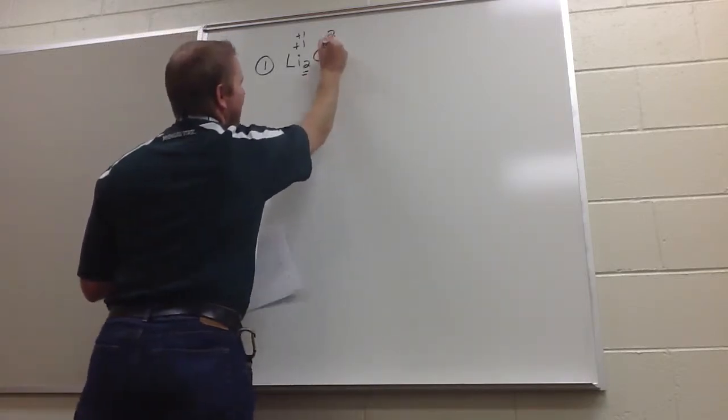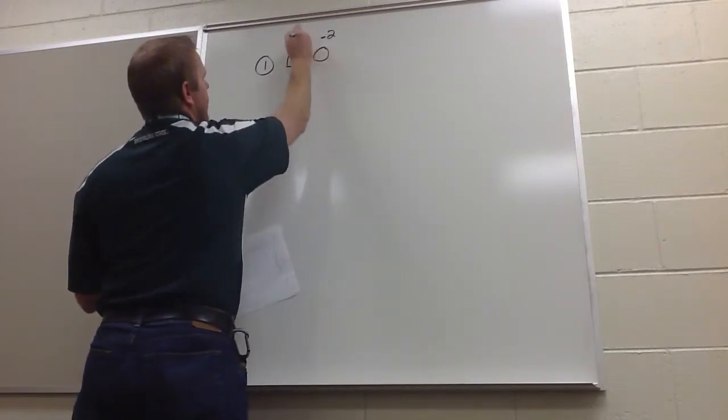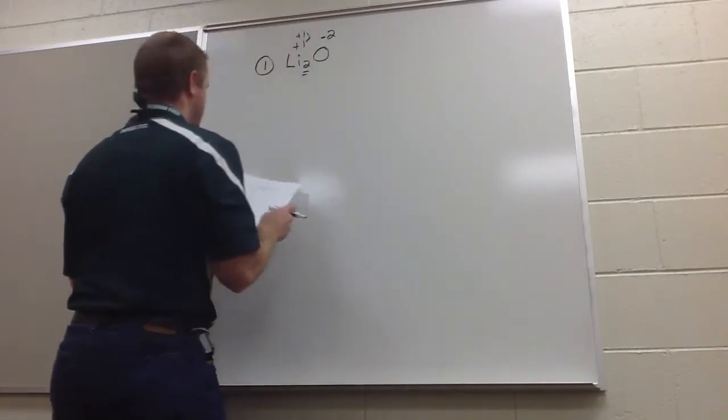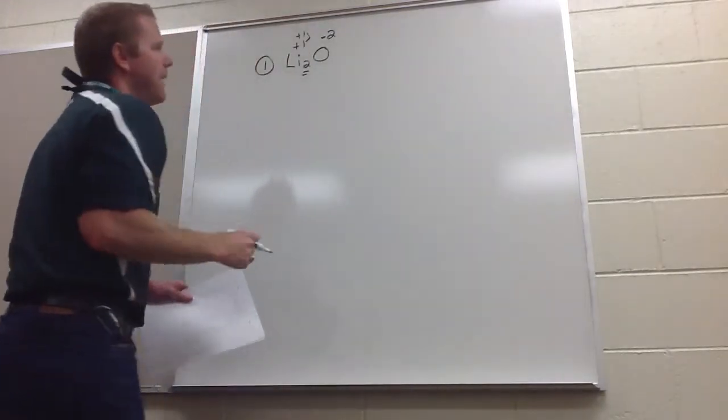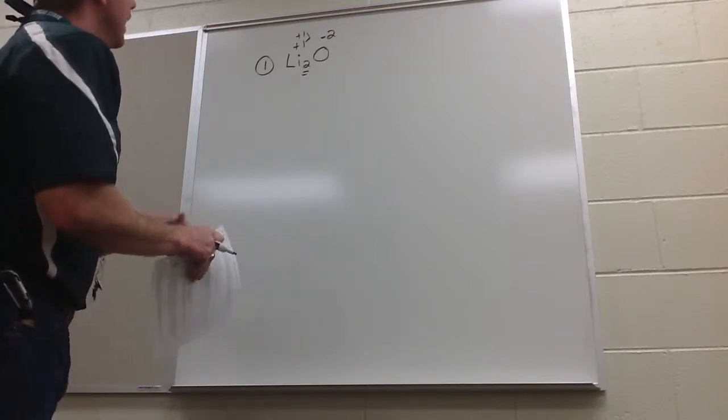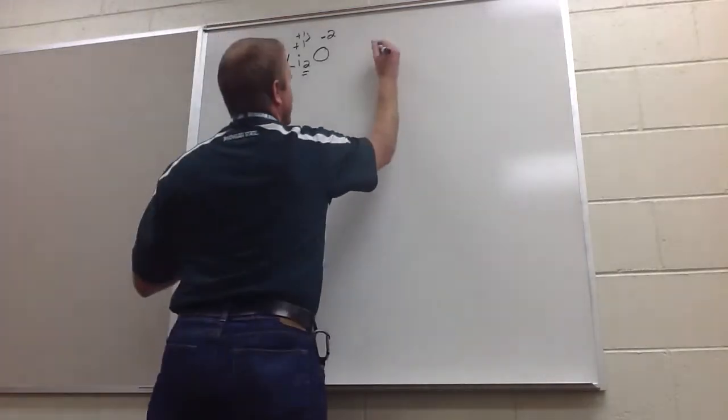Now, that one oxide ion is negative two. These two are positive one. Therefore, positive two, negative one cancels each other out. Now, what you end up asking yourself on something that has monatomic ions like this is, first of all, you ask yourself, what is the metal? Well, the metal is lithium.